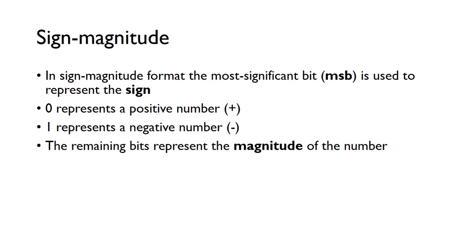In sign-magnitude format, the most significant bit — the one furthest to the left — is used to represent the sign. We use zero to represent a positive number and one to represent a negative number. The remaining bits represent the magnitude of the number, just the same way as we have done for unsigned integers.